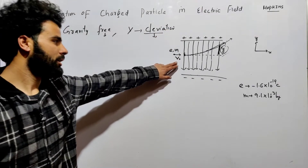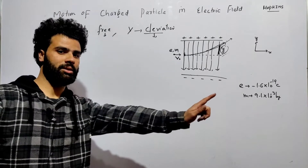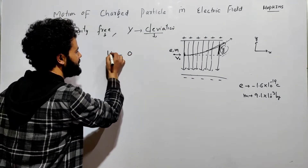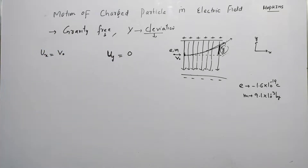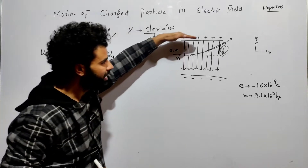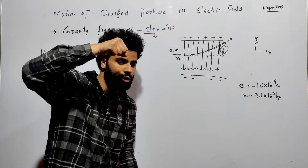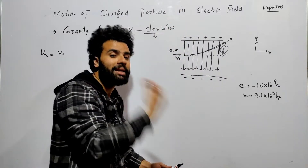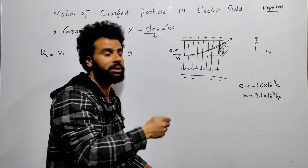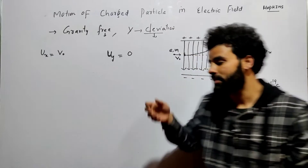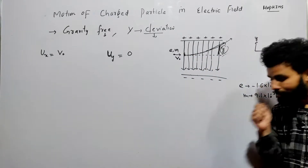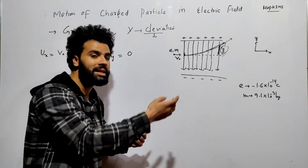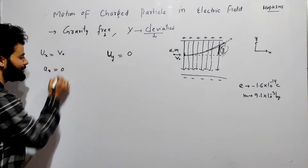The initial velocity along the x-axis is v₀, and the initial velocity along the y-axis is zero. The positive plate attracts the electron and the negative plate repels it, so the net force on the electron is along the y-axis. There is no force along the x-axis — nobody is pulling or pushing the electron along x — so acceleration along the x-axis is zero.